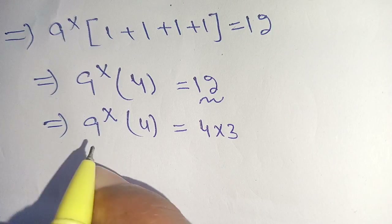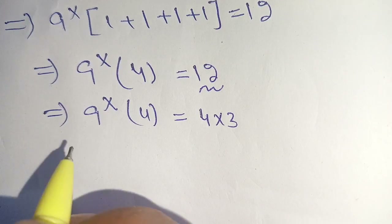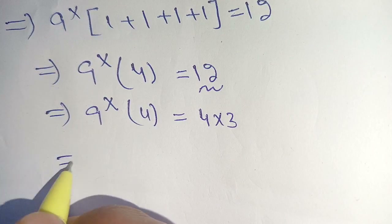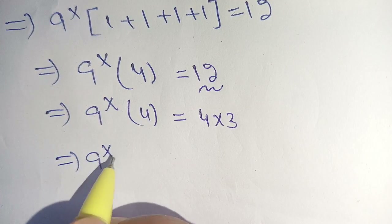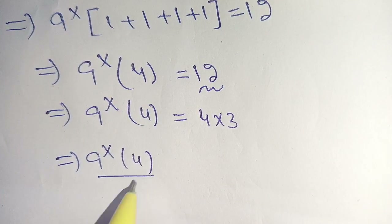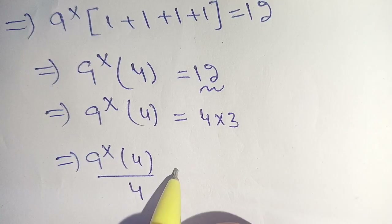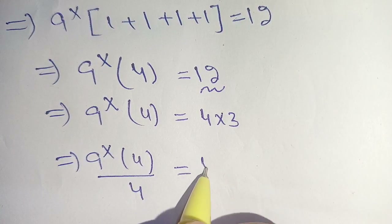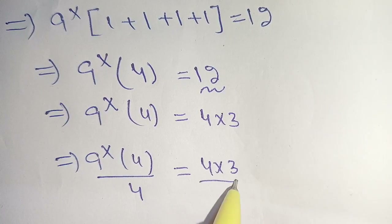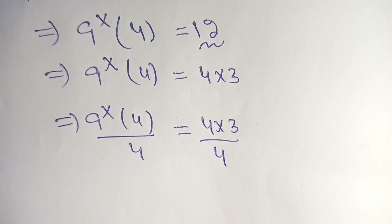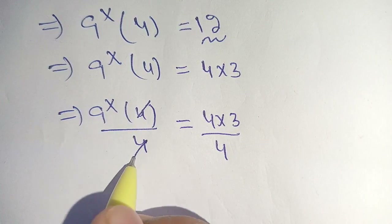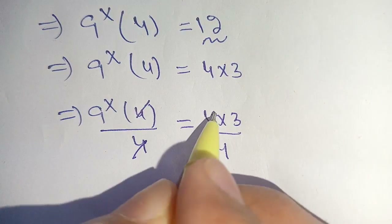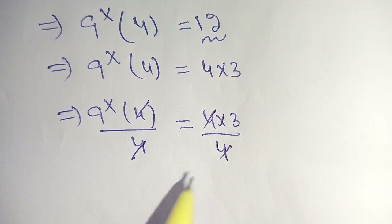We can divide both sides by 4: 9 to the power x times 4, divided by 4, is equal to 4 times 3 divided by 4. We can cancel out the 4s on both sides.